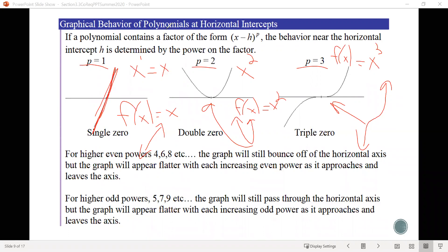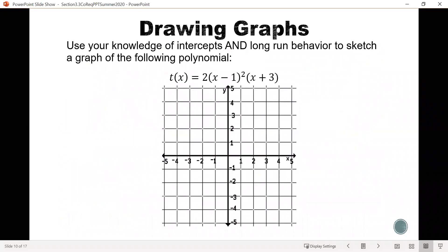All right, let's put this into practice. And we're going to use this knowledge to graph this function here. So t of x equals 2 times x minus 1 squared times x plus 3. And as we do this, we're actually going to combine a lot of different things we've been talking about this chapter. So first of all, we're going to identify a bunch of stuff. We're going to look at the degree here. We're going to find where the horizontal intercepts are, along with their multiplicities. We're also going to find our vertical intercept.